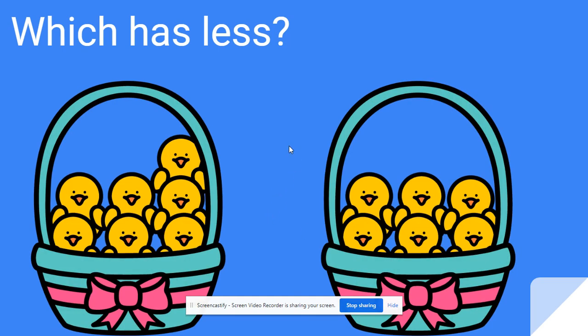Which basket has less? This basket over here has less chickens. It only has six. And this basket on the left has seven.